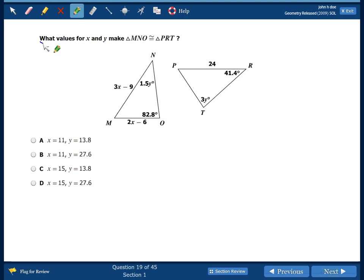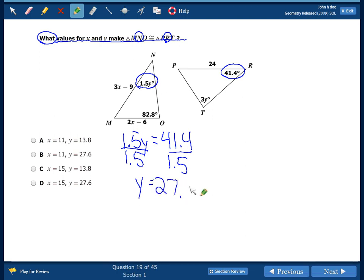The next problem says what values of X and Y make these two triangles congruent. Well, let's see if we can figure this out. So we know that N is going to be congruent to R. So here's angle N. There's angle R. So we do 1.5Y is equal to 41.4. So to solve for Y, we just divide by 1.5. And we get Y is equal to 27.6. So right away we can rule out a couple of these.